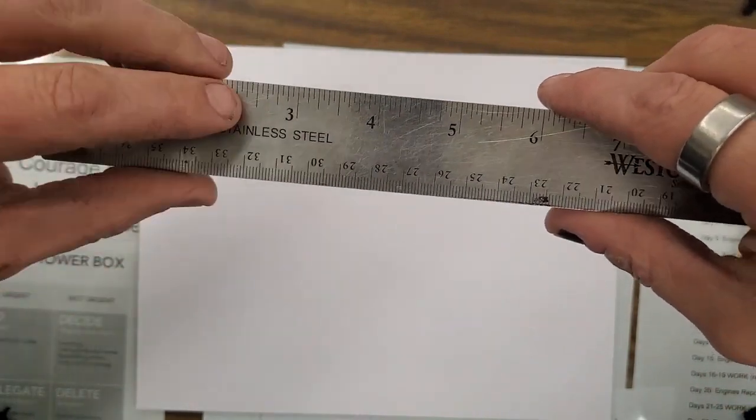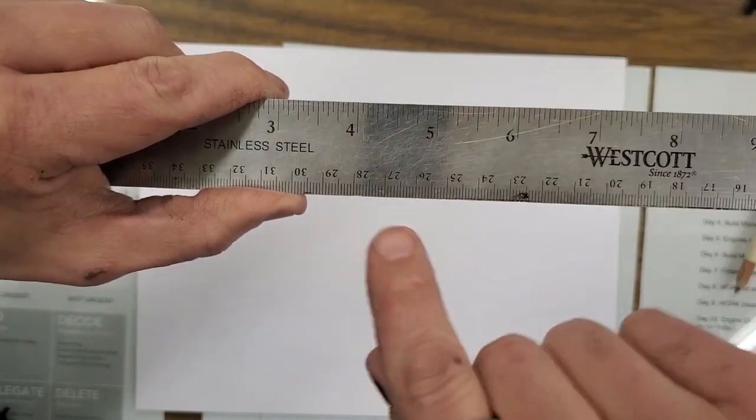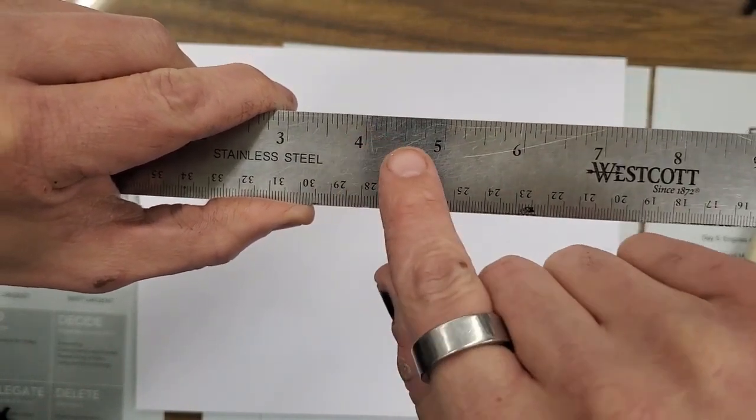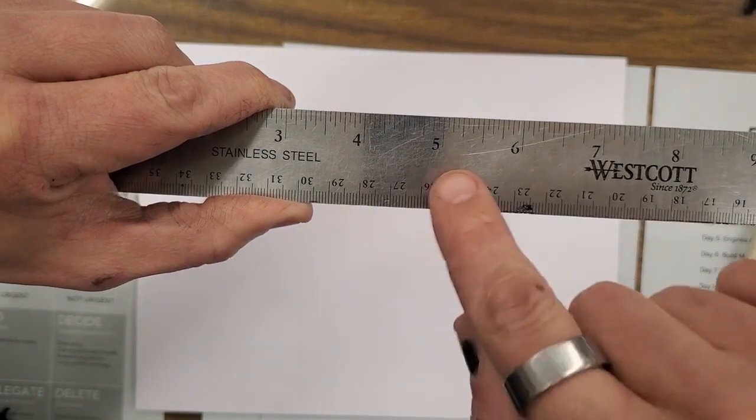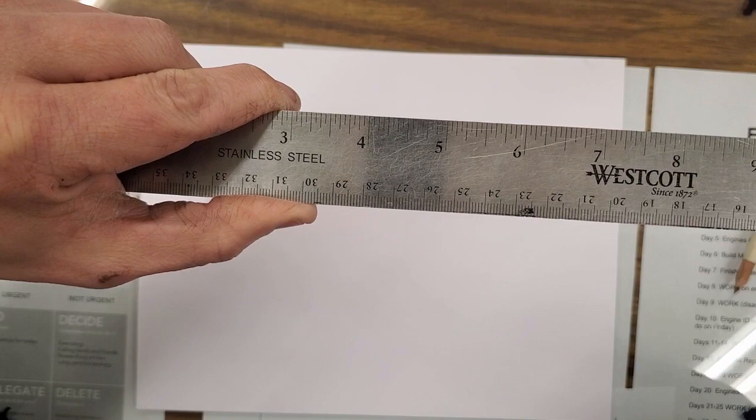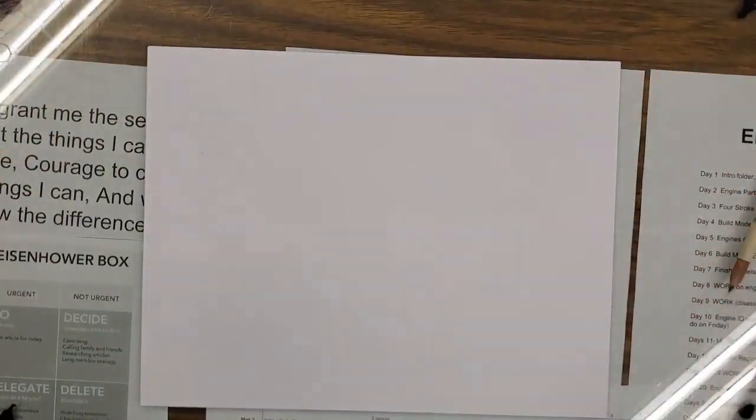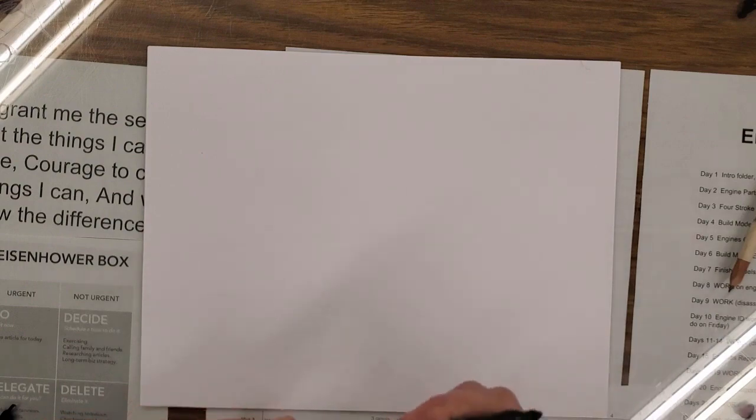It's an easy way to create a cheat sheet for all of these little marks. Now rulers have different length tick marks on them which can help us know, but even then when you're first starting it can be a little confusing. So here's my life hack for creating a cheat sheet.